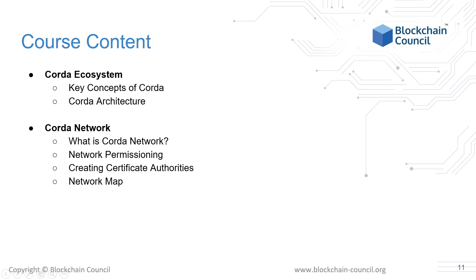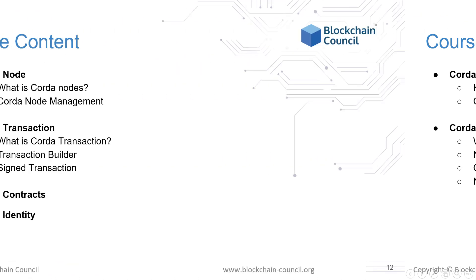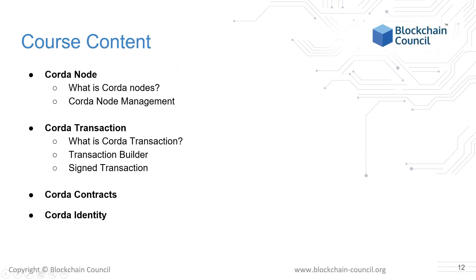In this course, we will discuss all these key concepts in detail. First is the Corda network, where we see what is the Corda network, its components like network map, doorman, network permissioning, and so on. Next, we will see Corda nodes — what is a Corda node, its structure, Corda node management, shell, node database, and administration. Then we will discuss about Corda transactions, where we see what is a transaction, how to create a transaction, and signing a transaction.